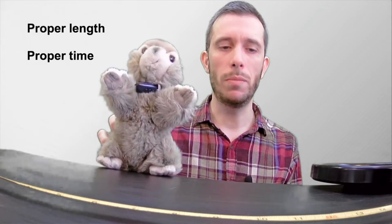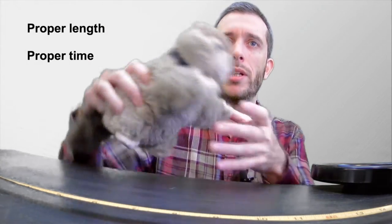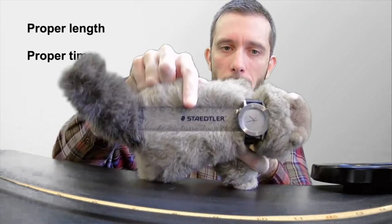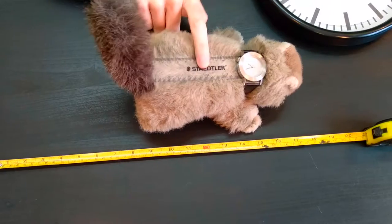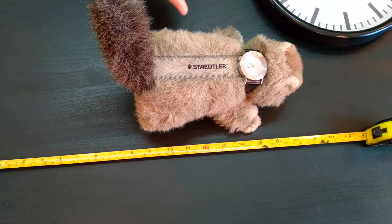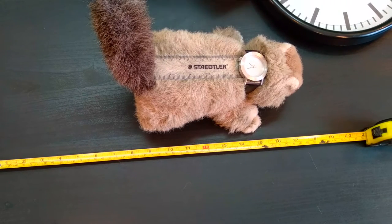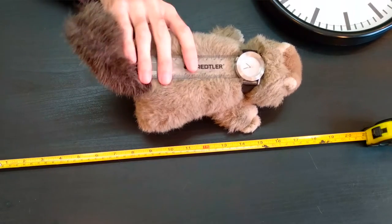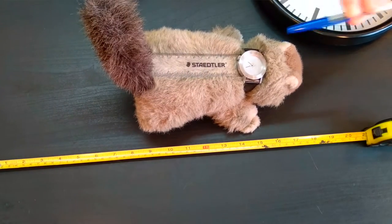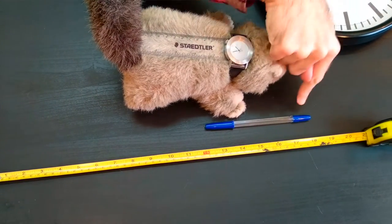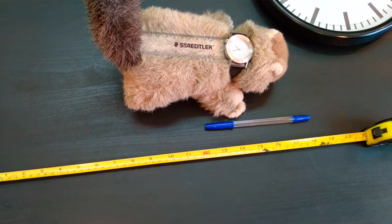Meet my friend Bob. Bob here also has a clock and he has a measuring device with him. As long as Bob is not moving relative to me, the time elapsed between two events that Bob is measuring and that I am measuring will be exactly the same, as will the distance we measure. For example, if we both measure the length of this pen, we will both agree on what the length of the pen is.